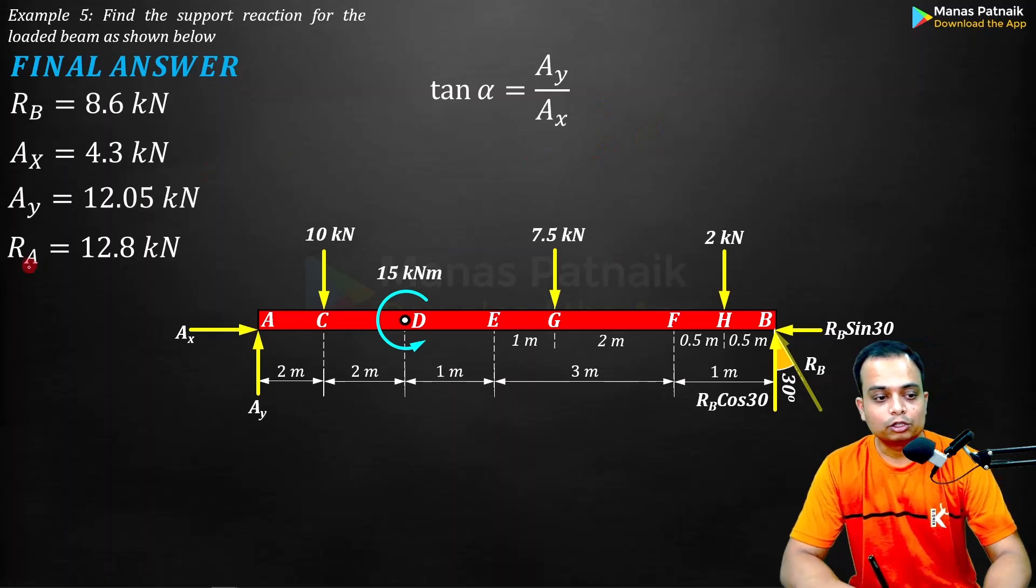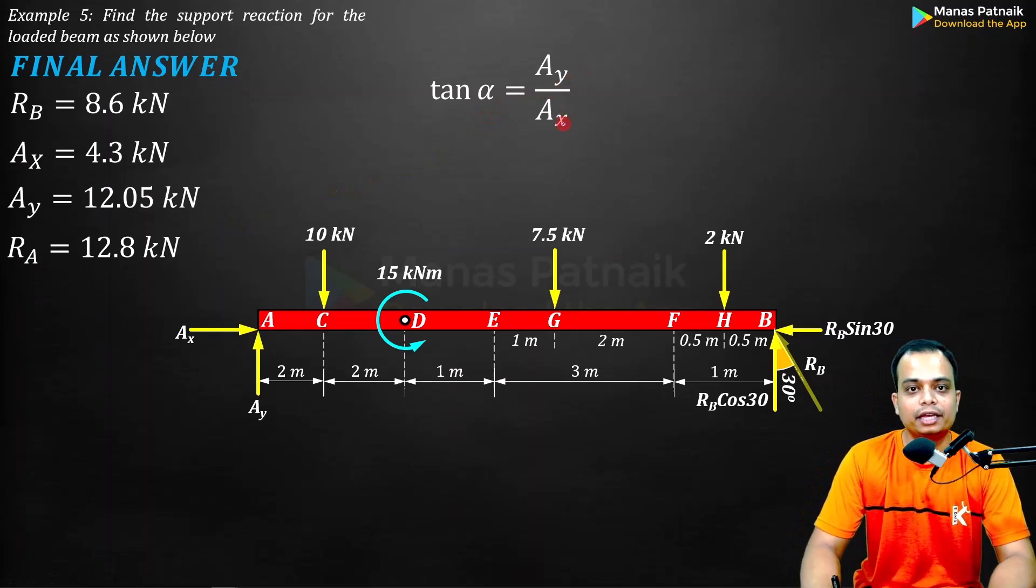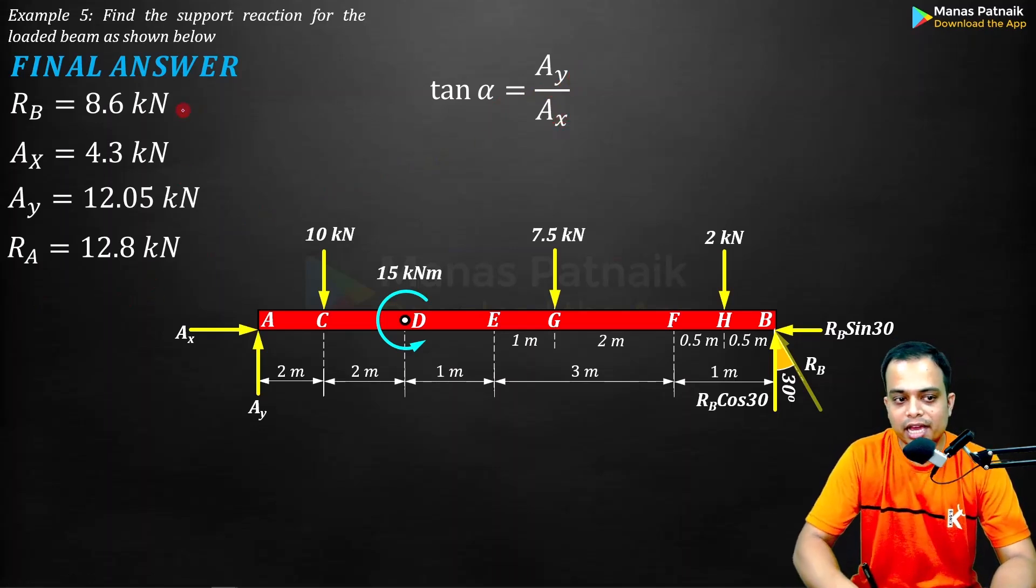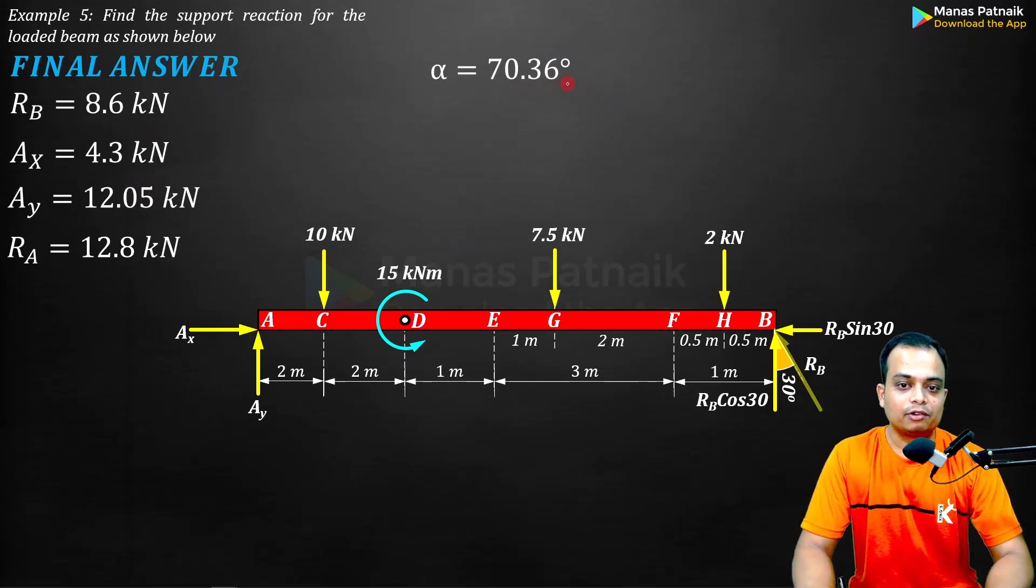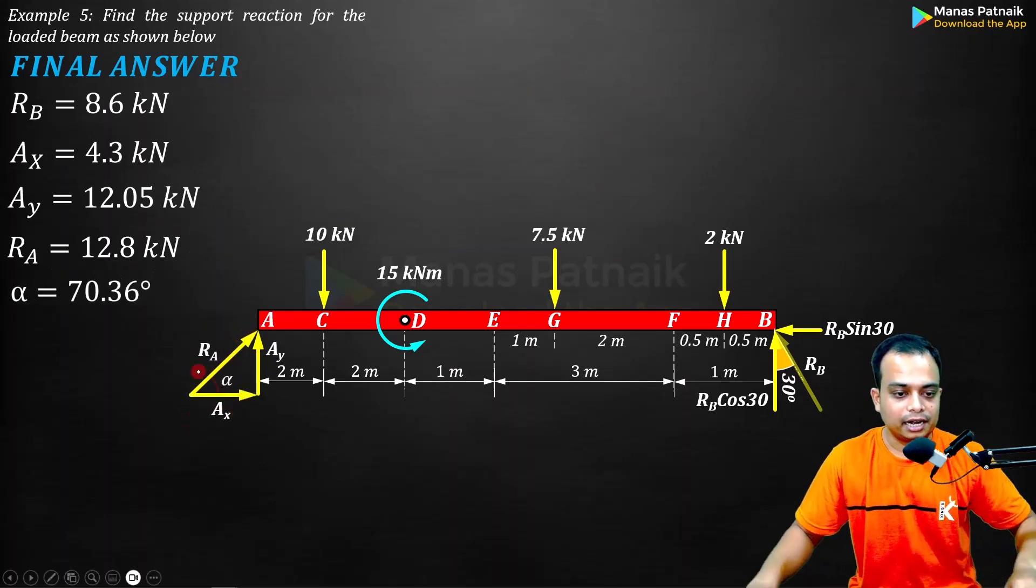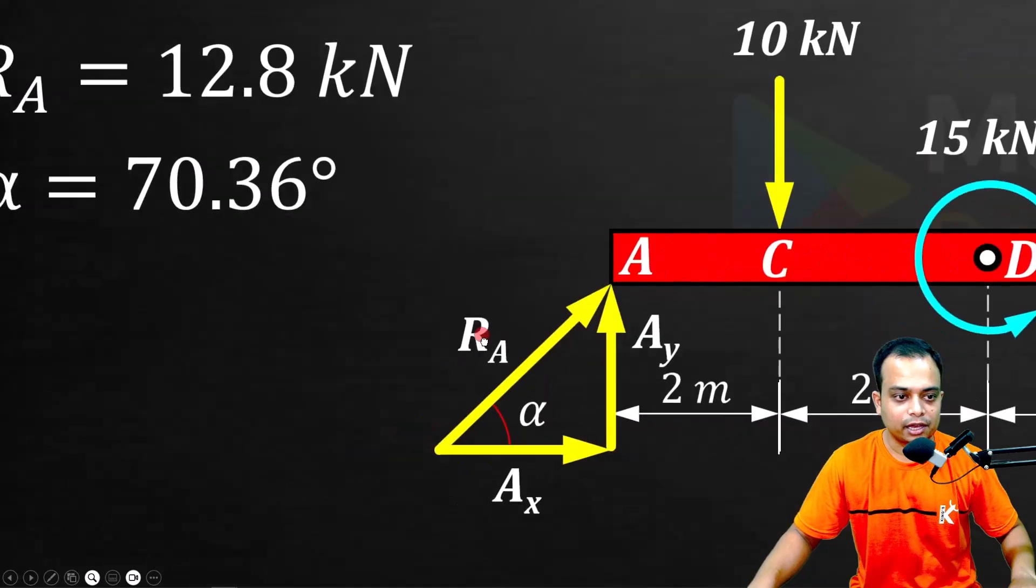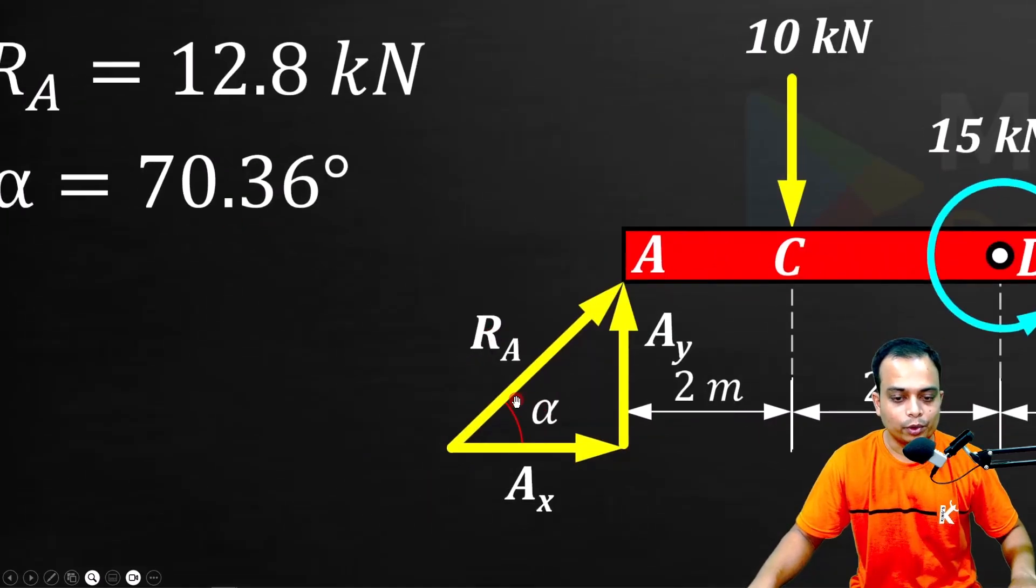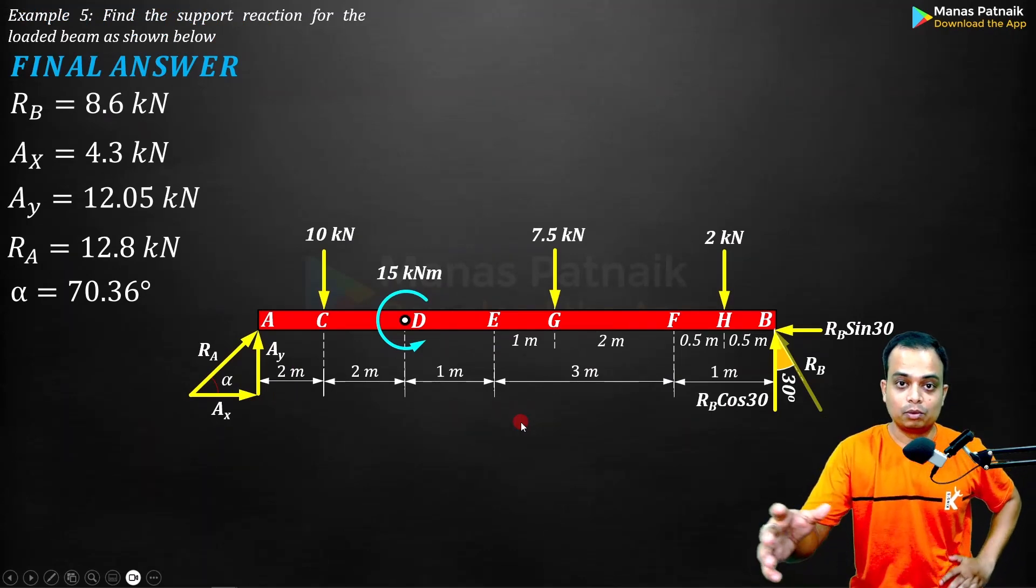You can also find the angle that the resultant makes. Very simple formula: Y direction force over X direction force. You already have these values: 12.05 and 4.3. Just put it in, do the inverse tan. This is what you get: 70.36. That means the resultant makes an angle of 70.36 with the horizontal. The resultant is making an angle of 70.36 with the horizontal.